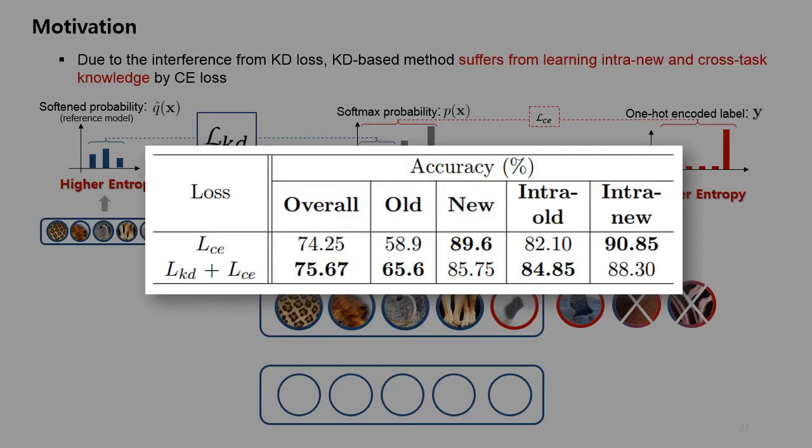Let's look at the result of a corresponding experiment. By using distillation loss, we can see that it is good at learning intra-old knowledge from the fact that old and intra-old accuracy become higher when we use distillation loss together with cross-entropy loss. But at the same time, we can see that performance for new knowledge gets worse, as its new and intra-new accuracy become lower.